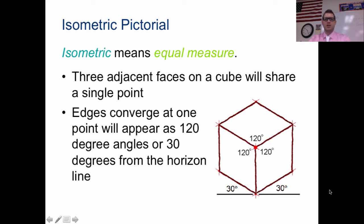Isometric. So isometric actually means equal measure. Right here, equal measure. If you look at this, this is one cube and it's perfectly square. So it has three adjacent faces. So we see a face here, here, and here.